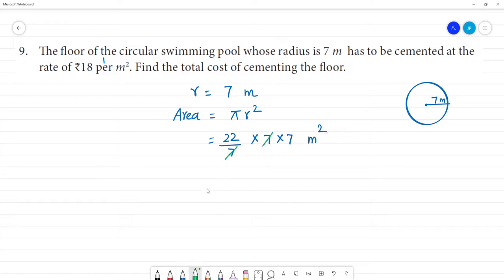That is equal to 22 into 7, which equals 154 meter square. Now one meter square, cost of cementing.